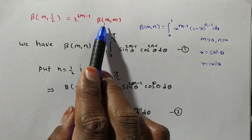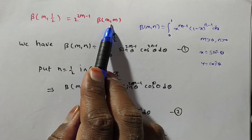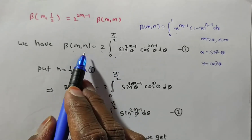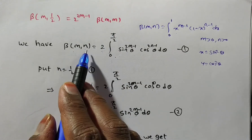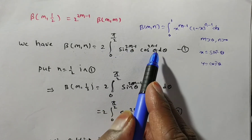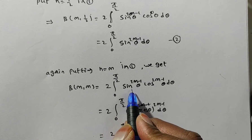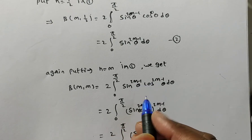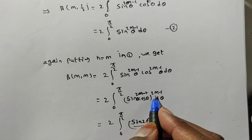Now go for the RHS part. We have beta of m comma n multiplied by 2 to the power 2m minus 1. We need to find beta of m comma m using the same trigonometric definition. Substitute n equal to m, giving: beta of m comma m equals 2 times the integral from 0 to pi/2 of sin to the power 2m minus 1 theta, cos to the power 2m minus 1 theta, d theta. Since both factors have the same power 2m minus 1, we can write sin theta times cos theta, all to the power 2m minus 1.